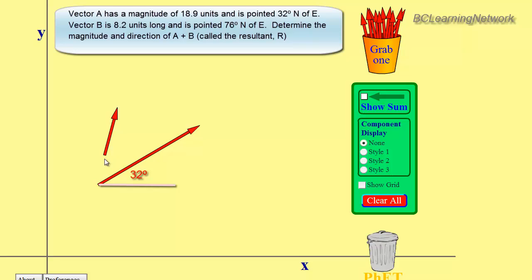Vector B is 8.2 units long, and it is at an angle of 76 degrees north of the east line. The question we're trying to answer is, what is the magnitude and direction of A plus B?